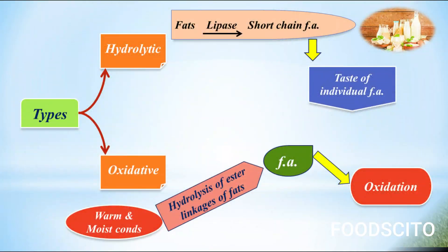Under warm and moist conditions, ester linkages of fats get hydrolyzed, and the fatty acids so obtained undergo oxidation, leading to oxidative rancidity. Of course, unsaturated fatty acids are more susceptible to oxidation. In the process of oxidation, initially peroxides are formed, which in turn, with due time, break down into hydrocarbons, aldehydes, and ketones. So that's all about rancidity and its types.